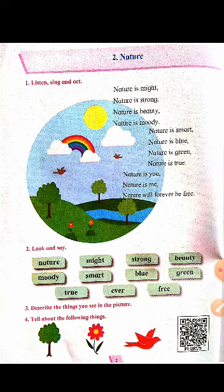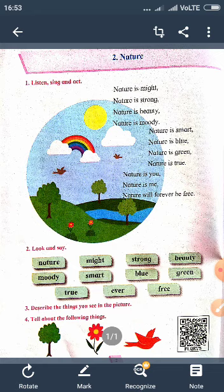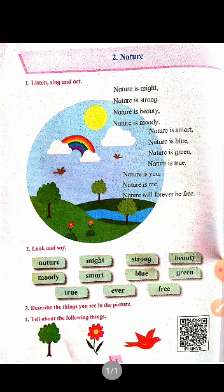Nature is very beautiful. आपको यह जो poem है वो with action के साथ sing करनी है, learn करनी है. So, repeat after me: Nature is might. Nature is strong. Nature is beauty. Nature is moody. Nature is smart. Nature is blue. Nature is green. Nature is true. Nature is you. Nature is me. Nature will forever be free. इस तरीके से आपको यह poem recite करनी है.